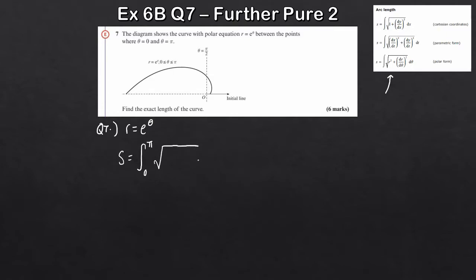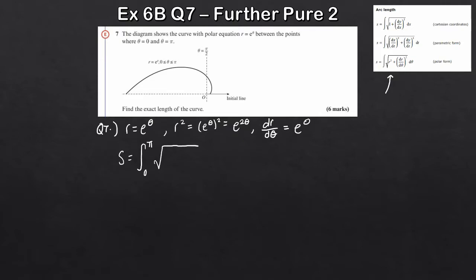It's the square root of R squared plus dr by dθ all squared. So R squared — well, that's just going to be e to the theta squared, so that's just e to the 2θ. And if we work out dr by dθ, that's just simply the derivative of R with respect to theta, which gives us e to the theta again. So this is actually going to be quite a nice question to work out. If I plug my R squared in, that's e to the 2θ here. And e to the theta all squared — because it's dr/dθ squared — will again be e to the 2θ.